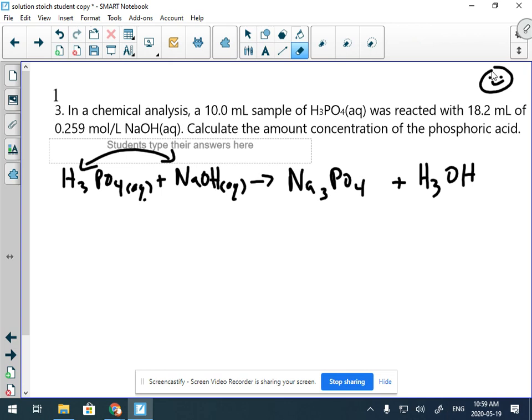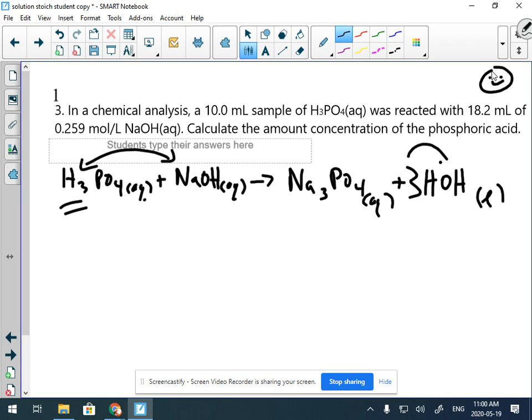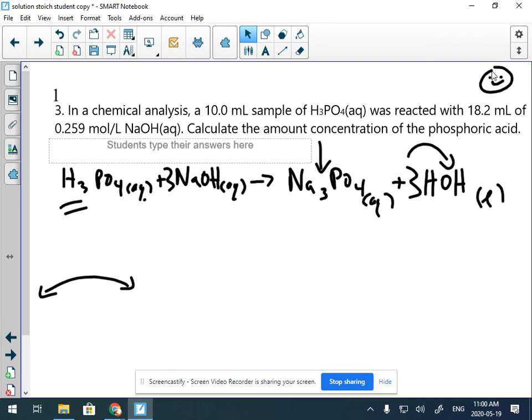Now we have to balance this reaction. If we look, we've got three hydrogens there, three hydrogens there, that's three hydroxides, three sodiums, so we'll need a three there. Okay, now I'm just going to get rid of my extra arrows here so now we have it balanced. All right, let's write down what we know and what we need to solve for.